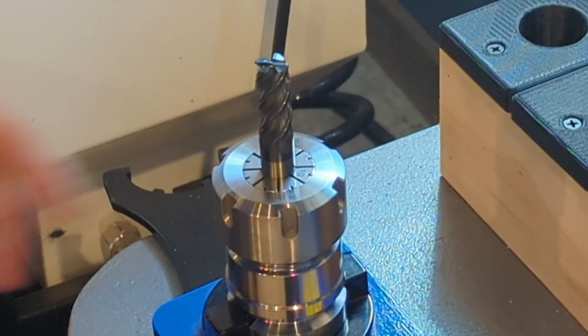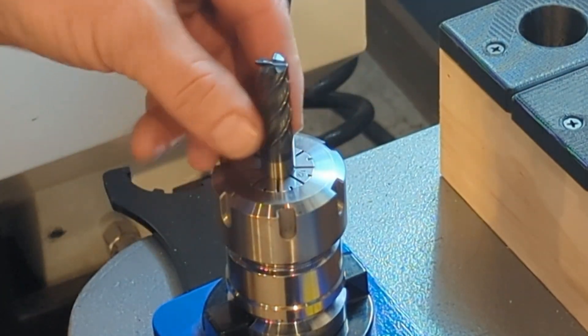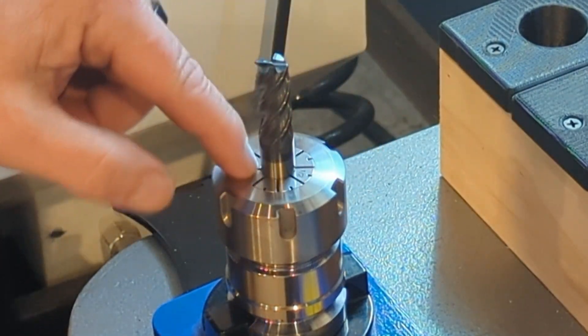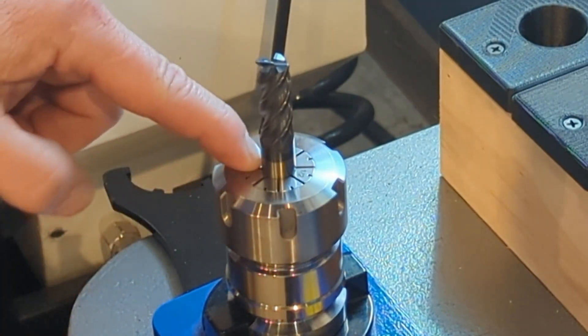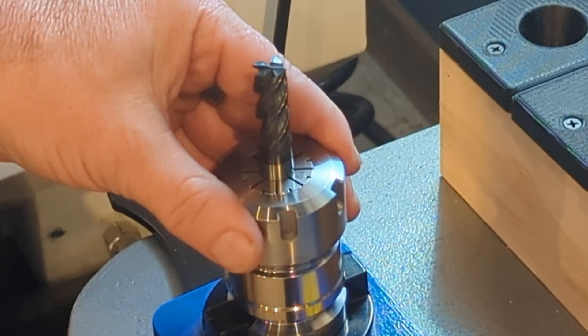So this is a properly installed ER32 collet or tool. This is a half-inch end mill in an ER32 collet. You can see here that it's flush. I haven't tightened it down just yet, but for demonstration purposes this works.